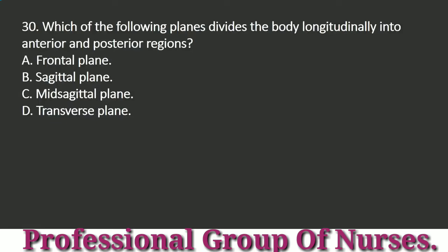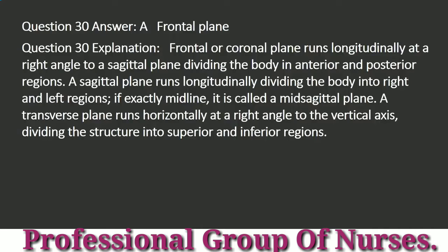Question 30: Which of the following planes divides the body longitudinally into anterior and posterior regions? a. Frontal plane. b. Sagittal plane. c. Midsagittal plane. d. Transverse plane. Answer: a. Frontal plane. Explanation: The frontal or coronal plane runs longitudinally at a right angle to a sagittal plane, dividing the body into anterior and posterior regions. A sagittal plane runs longitudinally dividing the body into right and left regions; if exactly midline, it is called a midsagittal plane. A transverse plane runs horizontally, dividing the structure into superior and inferior regions.